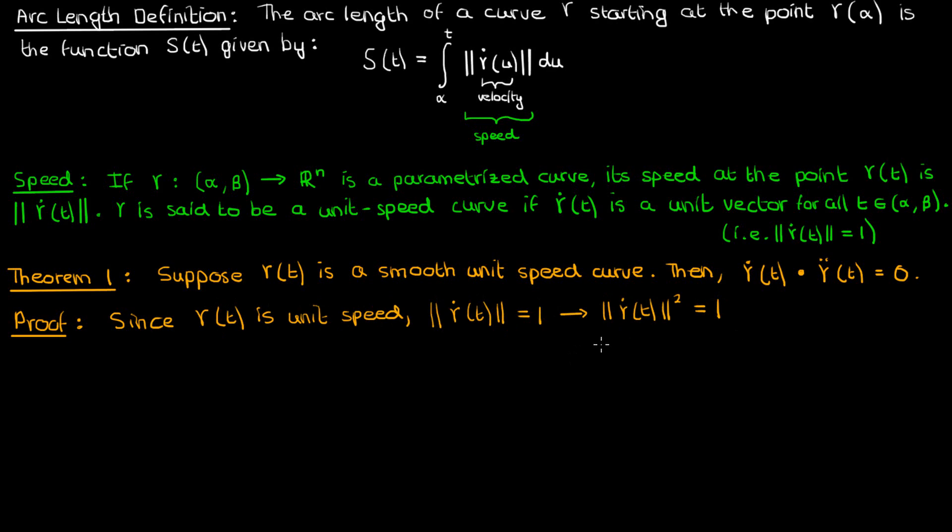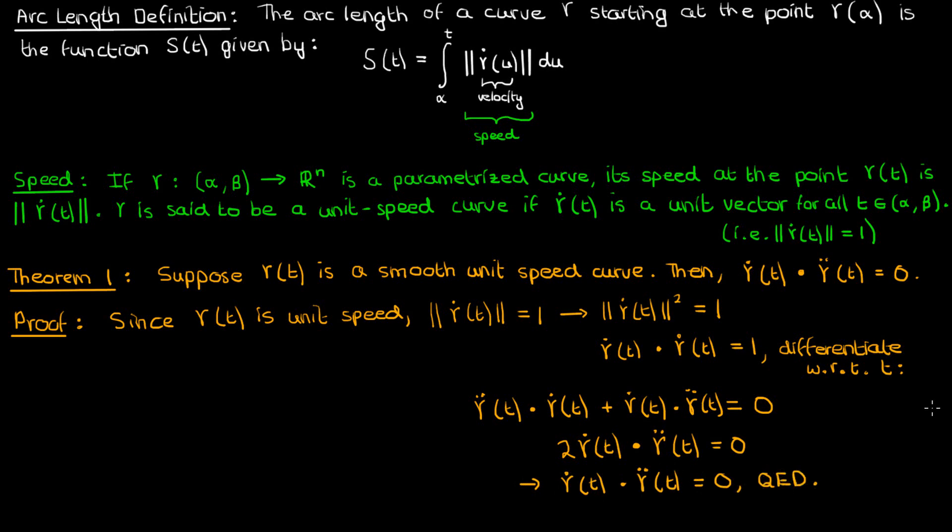And we know from linear algebra that the magnitude squared of a vector is just the dot product of that vector with itself. If we differentiate both sides with respect to t, we'll get 0 on the right, and we'll get γ̈·γ̇ + γ̇·γ̈ on the left, using the product rule of differentiation. Since the dot product is commutative, we can combine the terms on the left and get 2 times γ̇·γ̈, which means that γ̇·γ̈ is 0, which completes the proof.